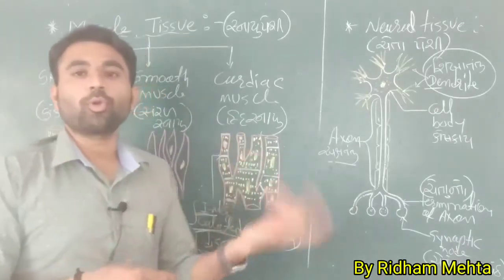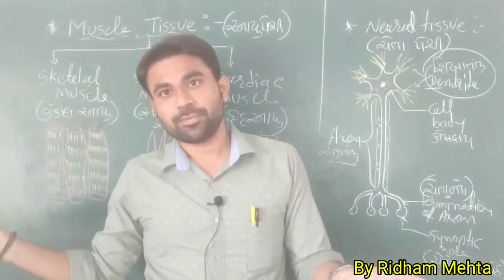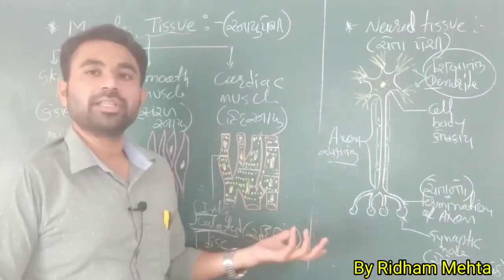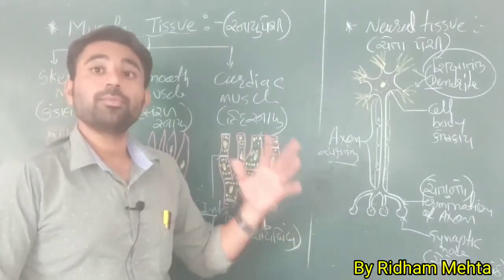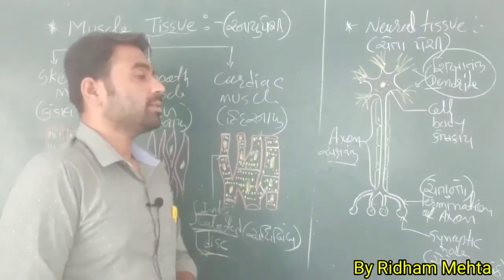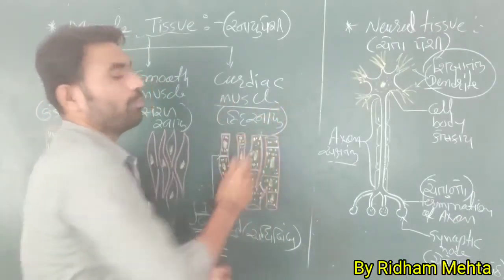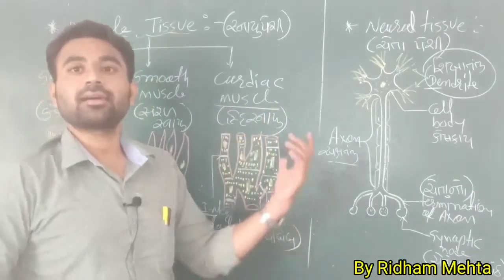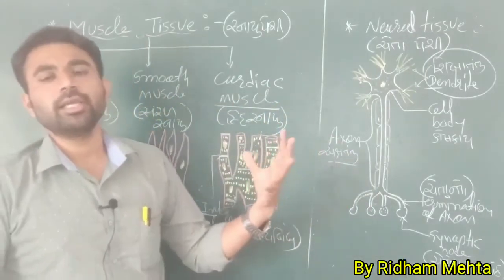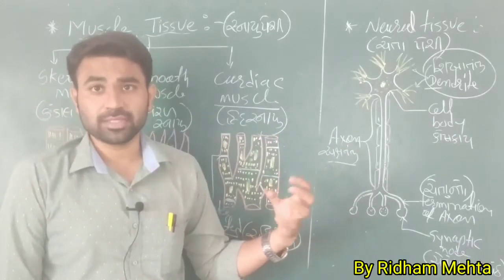The arrangement of protein fibers in cardiac muscles is the same as in skeletal muscles. Another unique feature is that cardiac muscle is a non-fatiguing tissue — it doesn't get tired. There is a continuous contraction and relaxation process in cardiac muscles.